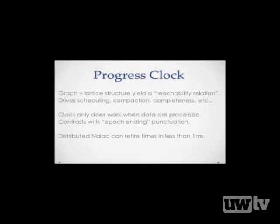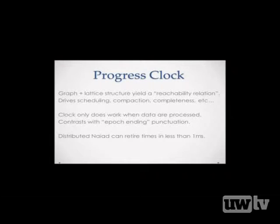We take this dataflow graph with loops and combine it with the lattice structure, yielding a relation on pairs of vertices and lattice elements — essentially a new partial order. This partial order drives all of our scheduling, our compaction, and our completeness: when do we announce to the subscribe function that the data are done? It's really hard to do this otherwise — things get really messy and confusing. One really important property of this protocol is that it only does work when data are actually processed — only when you actually read records, consume them, and produce new records does it transmit anything.